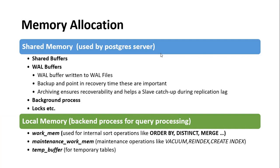PostgreSQL server memory can be broadly categorized into two areas: shared memory and local memory. The shared memory area is mainly used by the PostgreSQL server for internal activities. Within shared memory, we have shared buffers, which keep the most frequently accessed data in memory to reduce stress on disk I/O.